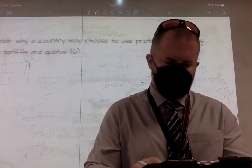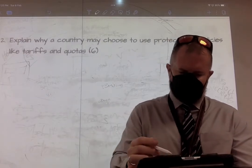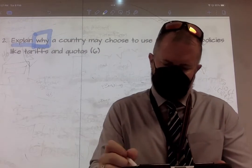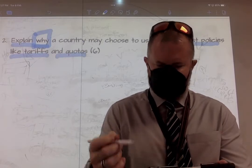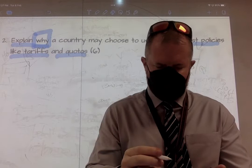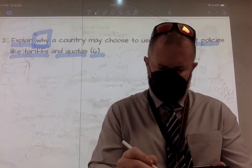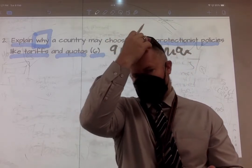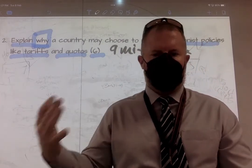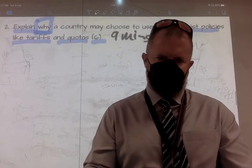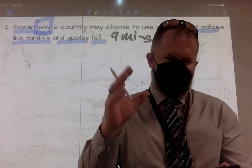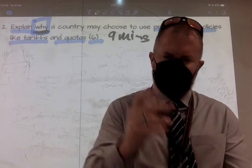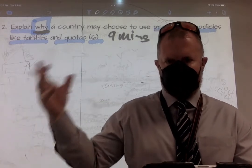You don't really need to do much more than that for that particular question. You've got both definitions in there. I've perhaps added a bit more than you actually need with the tariff explanation, and I've got a real-life example just to add to it, then compared it to the quota. The next part is: explain why a country may choose to use protectionist policies like tariffs and quotas. It's an explain question worth six marks, so nine minutes max.